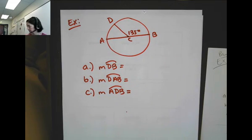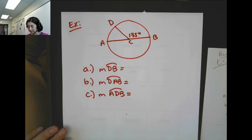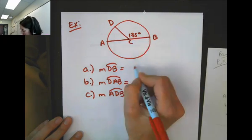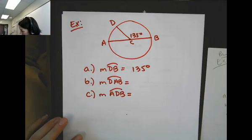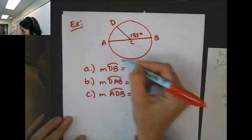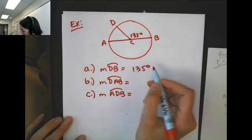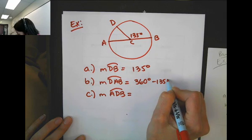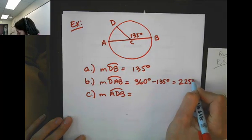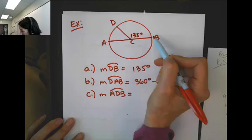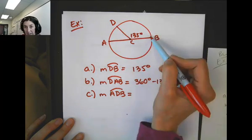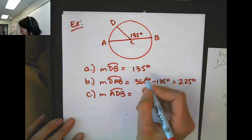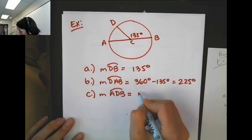Really pause it. Alright, we're back. The measure of arc DB is the measure of the angle, so that's 135. Measure of DAB, since a full circle is 360, is going to be 360 minus 135, or 225 degrees. And the measure of arc ADB, I can tell from the diagram that's straight across and goes to the center, so that's the diameter. That measure of that arc is 180 degrees.